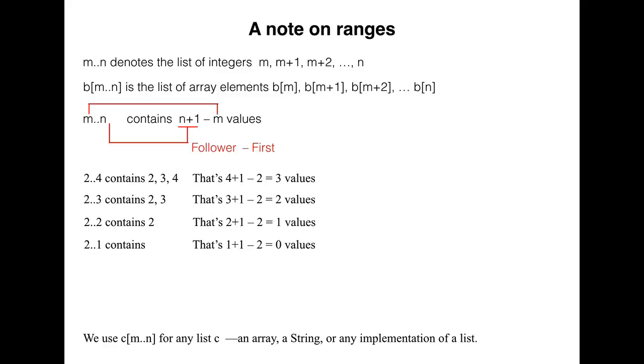The last example is especially noteworthy. Note how it follows the pattern established by the others. It indicates that if the second number, 1 in this case, is 1 less than the first number, 2, then the range represents the empty set of integers. This may seem weird, but mathematically it is just what we want. And it helps to simplify some assertions used in explaining algorithms, as you will see later.